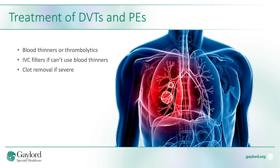There are different treatment options available for DVTs and PEs. The most common is to be put on a blood thinner or a thrombolytic. If someone has a DVT and they can't use blood thinners, sometimes a filter will be placed in the body which will catch the blood clot if it breaks free before it can make its way to the lungs. If the clot is very severe, there are surgical clot removal options. Thanks for watching and we hope you found it educational.